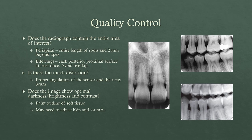For quality control, you want to make sure the radiograph contains the entire area of interest. For periapicals, that means the entire crown and entire root, but also at least two millimeters beyond the apex so you can evaluate the bone around the roots. For bite wings, it's important to open up the contacts between two different teeth, getting the angulation correct so the teeth come to a point or show just a thin dark line between them. If you have overlap, it's going to be much harder to diagnose caries because the overlapping enamel creates a very white or opaque line there.